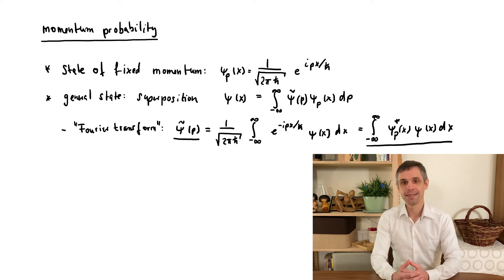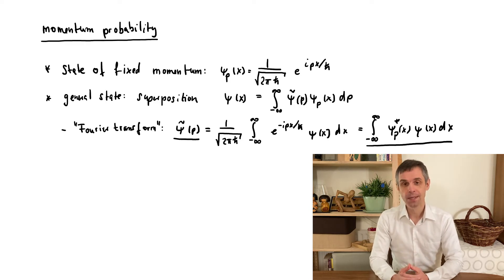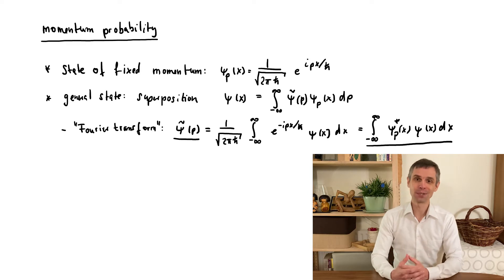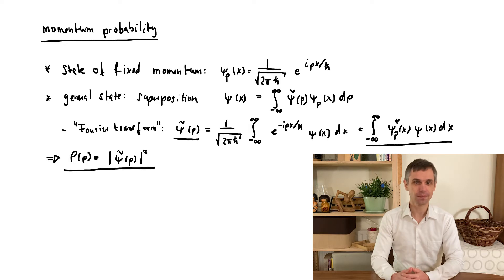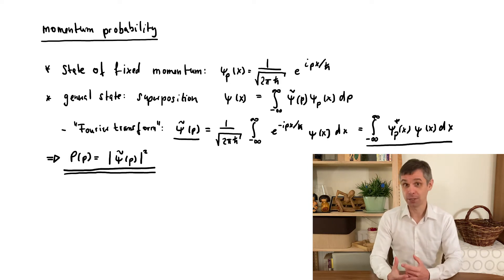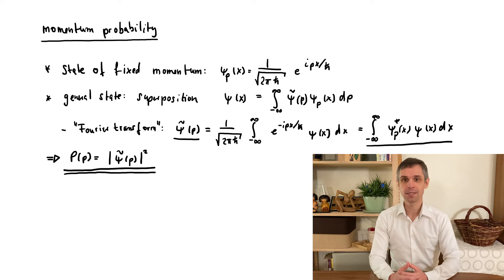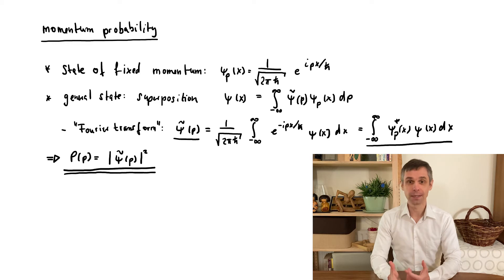Now mathematically ψ̃ is the Fourier transform of ψ, but physically we will call it the momentum wave function, and the reason is the following: by taking the absolute value squared we obtain the probability density for momentum. To see that this is a natural definition, think of the case of just a few, perhaps only two plane wave components.